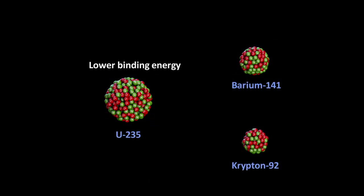Uranium has a lower binding energy than the combined binding energies of barium and krypton. When uranium splits, the overall binding energy of the system increases. This means that krypton and barium are in a more stable and lower energy state than uranium. And in going to this more stable energy state, energy is released.